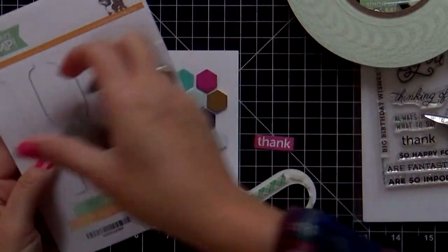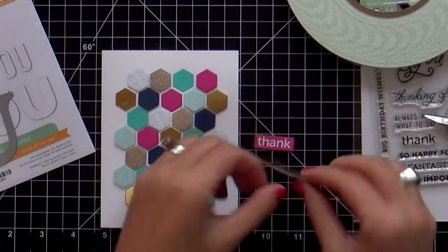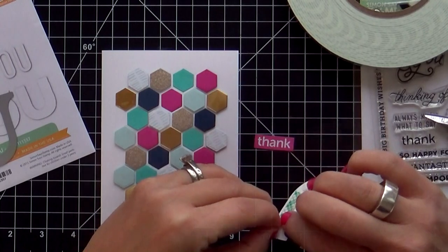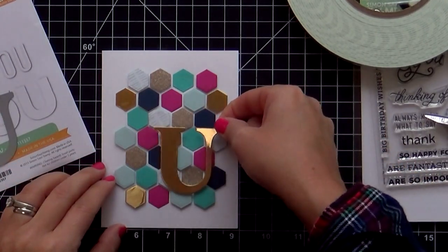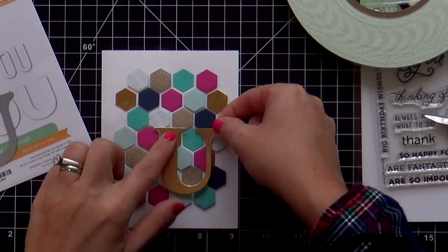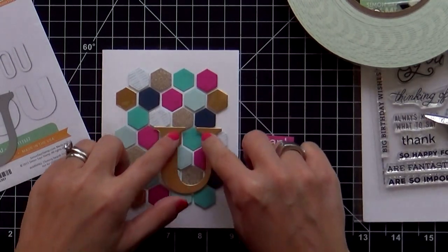The big U dies. Look at that big U. I'm in love with it. I die cut it on some gold foil cardstock because I'm fancy schmancy like that. I mean, look how classy that gold foil looks on top of this hexagon pattern. I can't even, I can't even.